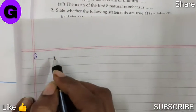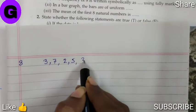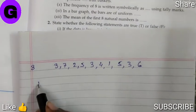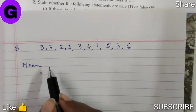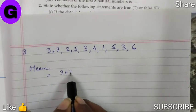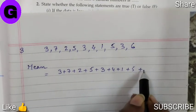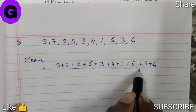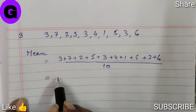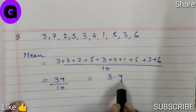Sum number 3: the data are 3, 7, 2, 5, 3, 4, 1, 5, 3, 6. First we find the mean by adding all values and dividing by the number of terms: (3+7+2+5+3+4+1+5+3+6) / 10 = 39 / 10 = 3.9. So the mean is 3.9.